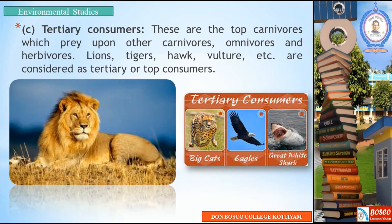Tertiary consumers are the top carnivores which prey upon other carnivores, omnivores, and herbivores. Lions, tigers, hawks, and vultures are considered tertiary or top consumers. Primary consumers, secondary consumers, and tertiary consumers make up the full consumer hierarchy within the biotic components.